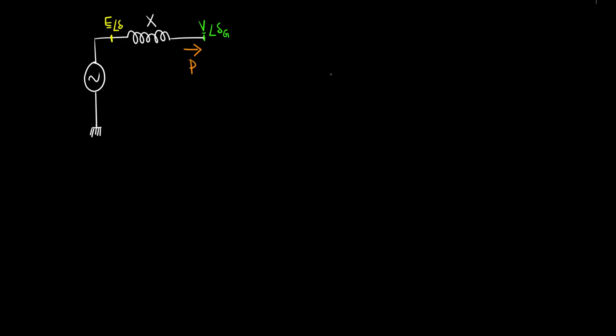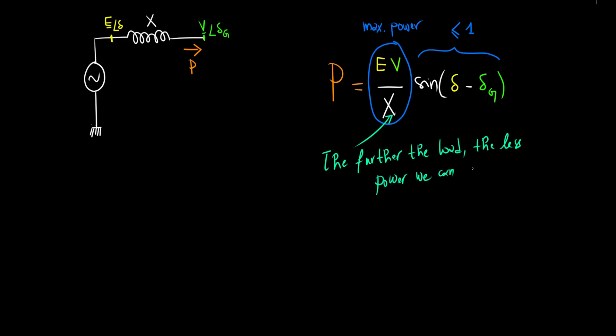First off, since the sine function peaks at one, there's clearly a maximum power transfer limit, determined by voltage levels and inductance. With inductance in the denominator, it's evident that the further the load is, the less power we can transfer. Also, higher voltage magnitudes mean more transferable power, hence why ultra-high voltage dominates long-distance power transmission lines.